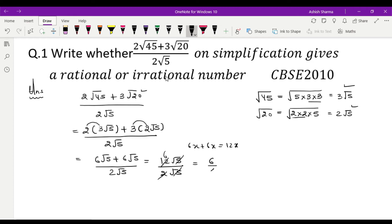Now 6 can be written as 6 upon 1. It is in the form of P upon Q. Theek hai, P and Q dono hi integers hone chahiye, Q should not be equal to 0, and P and Q dono co-prime hone chahiye. Theek hai, to saari conditions satisfy ho rahi hai.